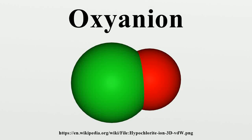An oxyanion or oxoanion is an ion with the generic formula AXOn^S-. Oxoanions are formed by a large majority of the chemical elements. The formulae of simple oxoanions are determined by the octet rule. The structures of condensed oxoanions can be rationalized in terms of ion polyhedral units with sharing of corners or edges between polyhedra.